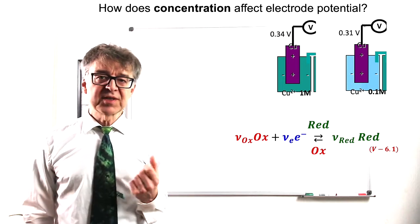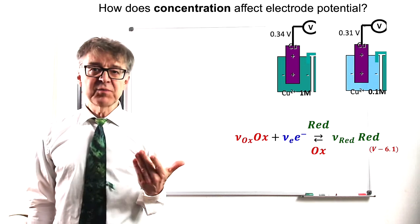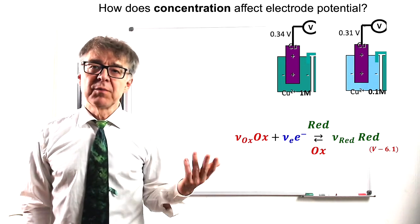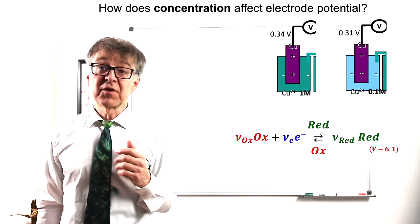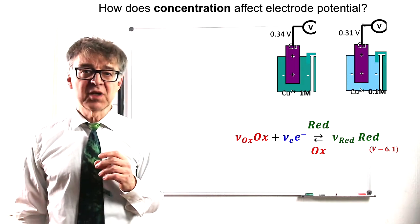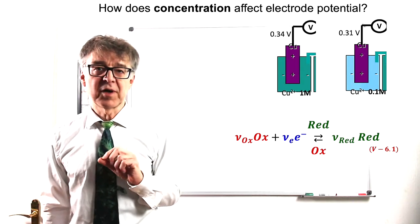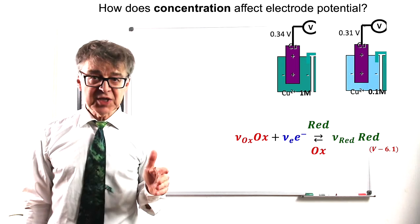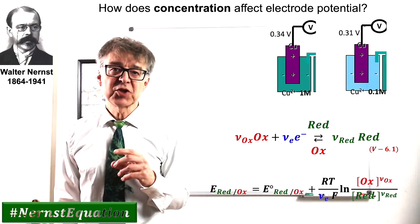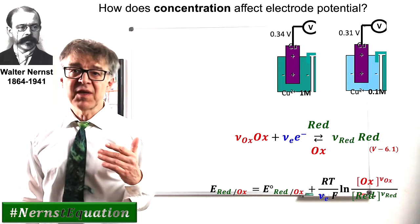In a 1 molar solution of copper chloride, the electrode potential of copper will be 0.34 volts. For a 0.1 molar solution, it is only 0.31 volts. The concentration dependence of the electrode potential can be calculated using the Nernst equation.